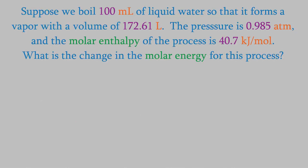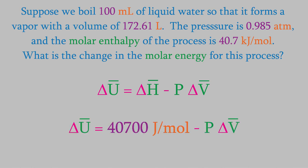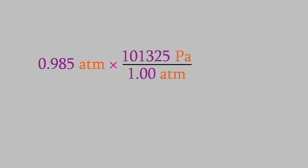Let's use this equation. Suppose we boil away 100 milliliters of liquid water at a constant pressure of 0.985 atm. The gas produced fills a volume of 172.61 liters, and the molar enthalpy of the process is 40.7 kilojoules per mole. What's the change in molar energy? We actually have all we need in order to answer this question. Delta H bar is 40.7 kilojoules per mole. In order to make the units work out, we'll write that as joules per mole. The pressure is 0.985 atm, and we need to convert that into appropriate units too. In this case, that means we need pascals. You might recall from previous videos that an atmosphere is 101,325 pascals. So that gives us this as our pressure.